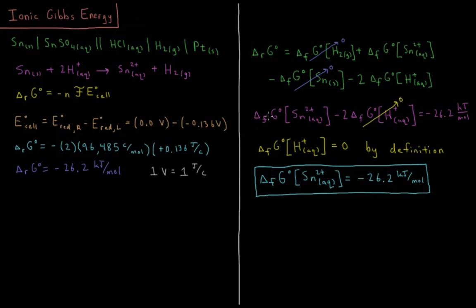With that convention, the standard Gibbs energy of formation of aqueous tin 2+ ions equals the standard Gibbs energy of reaction, which is −26.2 kilojoules per mole. So by measuring the standard EMF and working through the stoichiometry, we can determine that ΔG°f for aqueous Sn²⁺ cations is −26.2 kilojoules per mole.